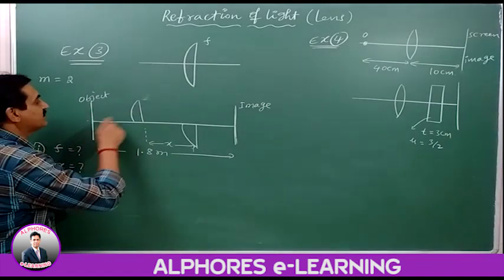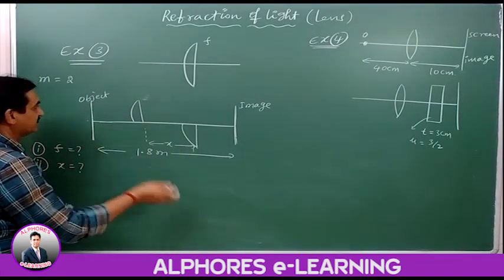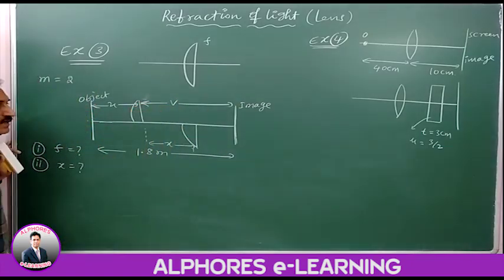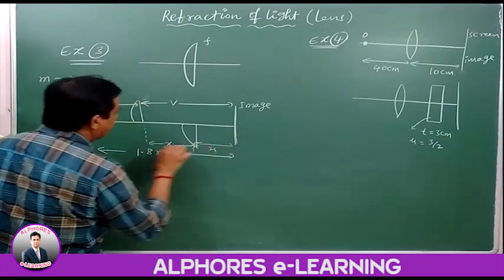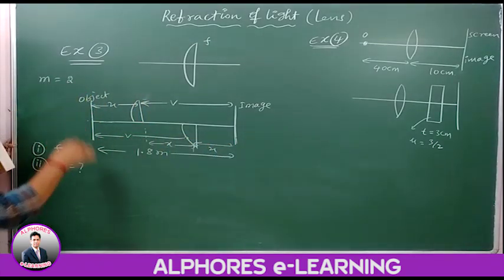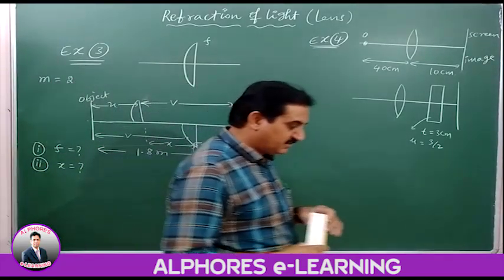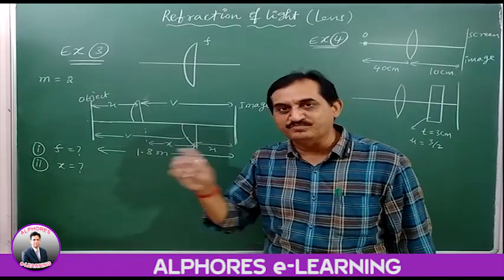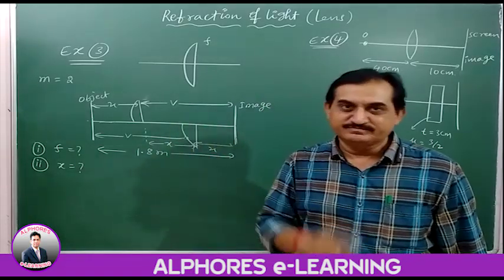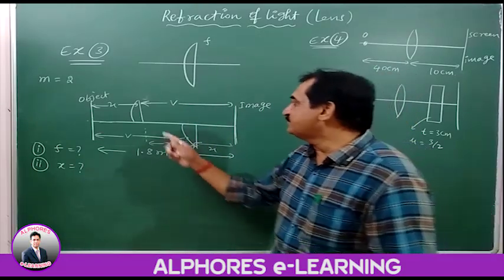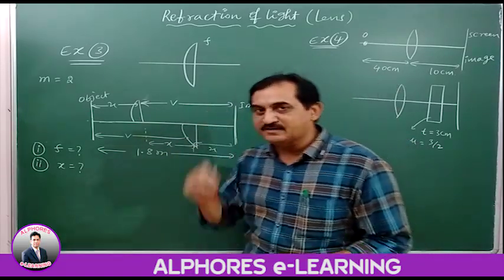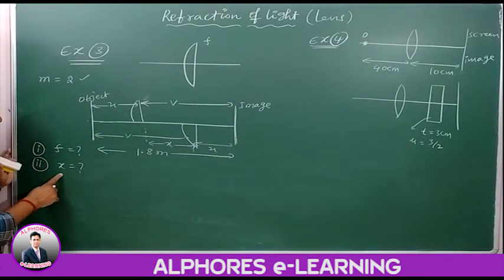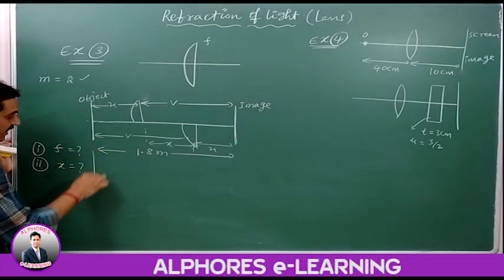For any part you consider, this is the object distance and this is the image distance. One key point is clearly mentioned: the image formed by one of the parts is double the size of the object, meaning its magnification is 2. So magnification equals 2 is given, and we need to find the focal length and the separation between the two parts.